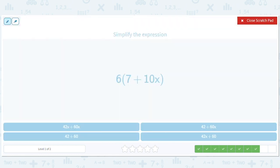So this is 6 times 7, 6 times 10x. So we get 6 times 7 plus 6 times 10x. This gives us 42 plus 60x.